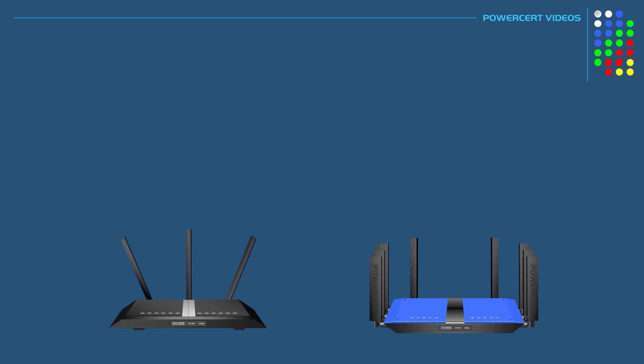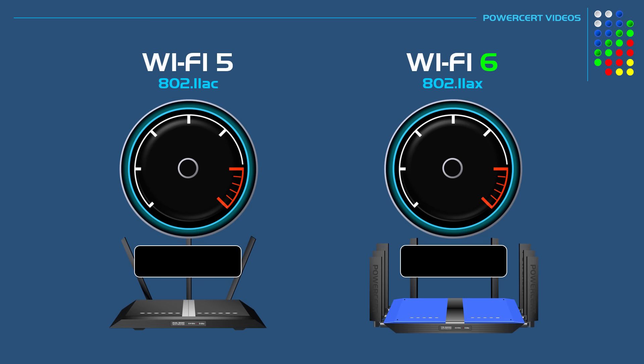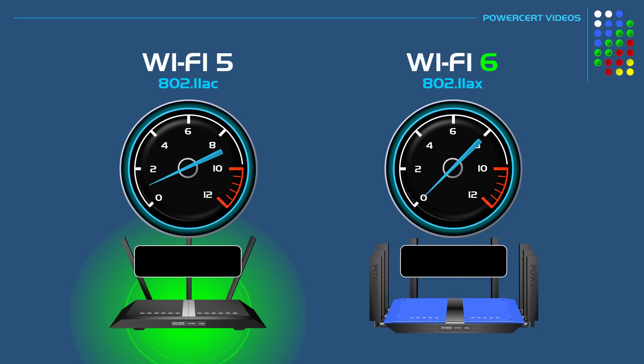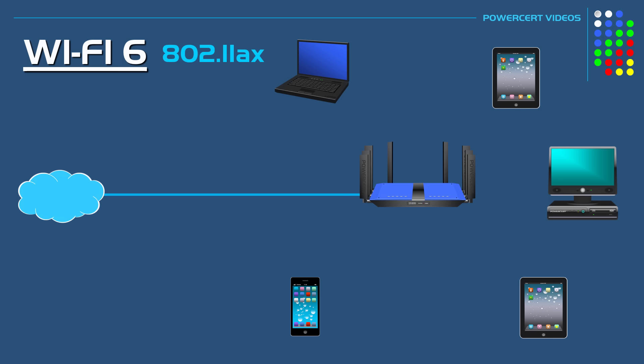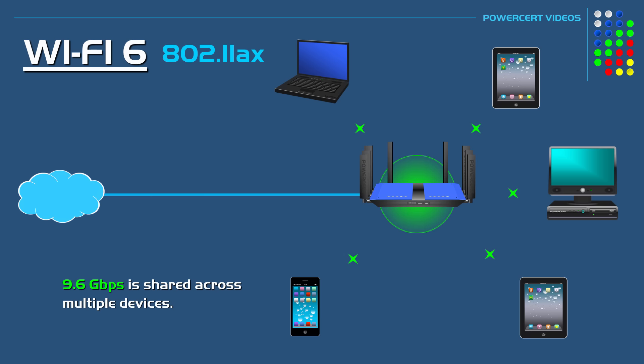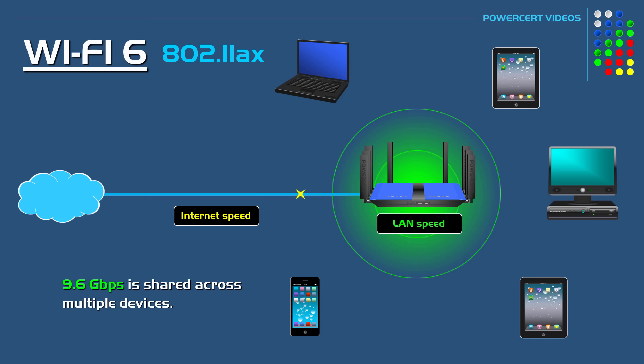So what are the differences between Wi-Fi 6 and Wi-Fi 5? Well, one of those differences is obviously speed. The older Wi-Fi 5 had a maximum speed of 3.5 gigabits per second. But with Wi-Fi 6, that speed has been increased to 9.6 gigabits per second, which is a significant increase. Now keep in mind this increase in speed is shared across multiple devices — it does not mean that each of your devices will achieve this speed. And also this speed is on your local area network, meaning in your home or office.